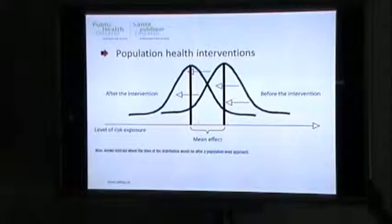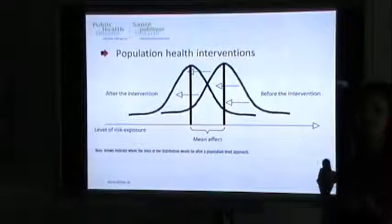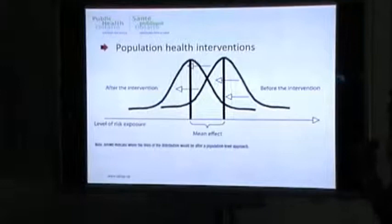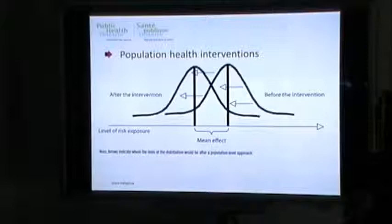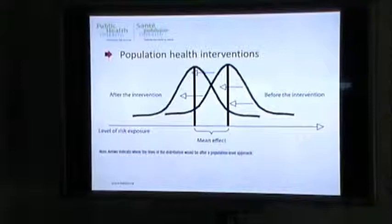What exactly do I mean by population health intervention? Instead of investing all efforts into supporting people already living with obesity or at highest risk, a population health approach tries to shift the risk of the majority of the population, as shown in before-and-after curves. We don't necessarily have a huge effect on individuals, but we have a very small effect on a large number of people.